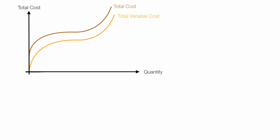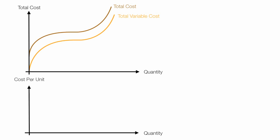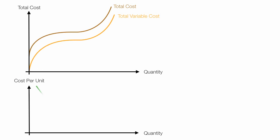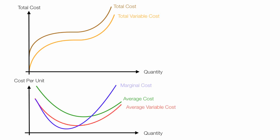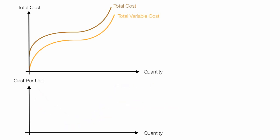Now I'm going to take the quantity axis, the horizontal axis, and drag it straight down. On the vertical axis I'm going to put unit cost, or cost per unit — different than total cost, of course. I'm going to draw an average cost curve, the average variable cost curve, and then the marginal cost curve, and I will discuss the shape of these curves and what makes them curvy shapes.